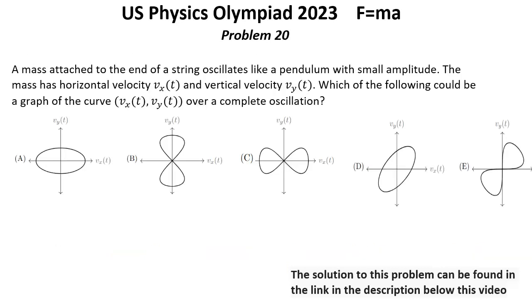Problem number 20. A mass attached to the end of a string oscillates like a pendulum with small amplitude. The mass has horizontal velocity v_x and vertical velocity v_y as functions of time. Which of the following could be a graph of the curve (v_x(t), v_y(t)) over a complete oscillation?